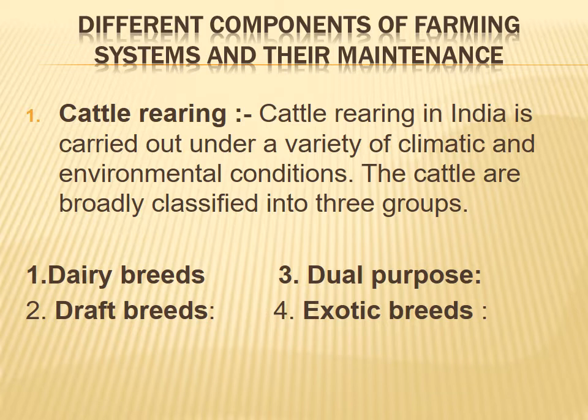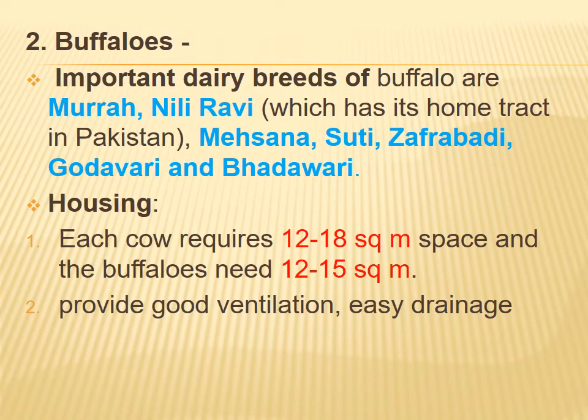First, cattle rearing. Cattle rearing in India is carried out under a variety of climatic and environmental conditions. The cattle are broadly classified into three groups: dairy breeds, draft breeds, and dual purpose exotic breeds.